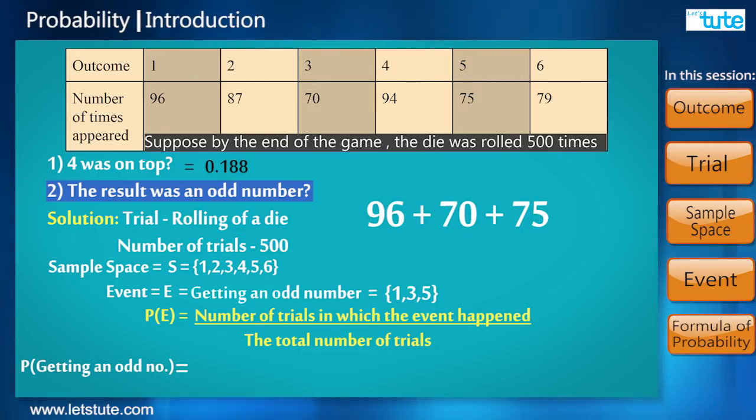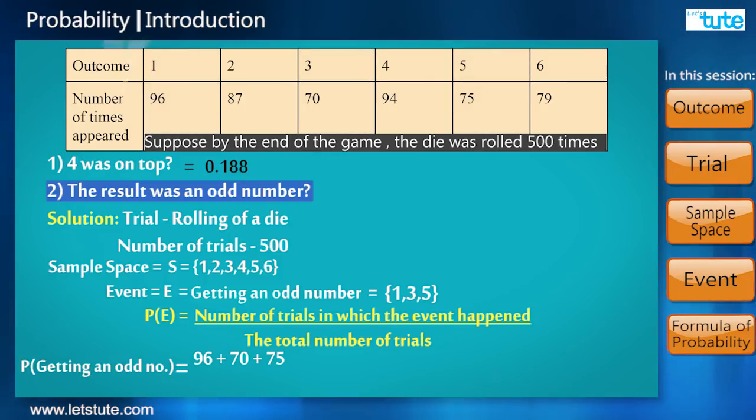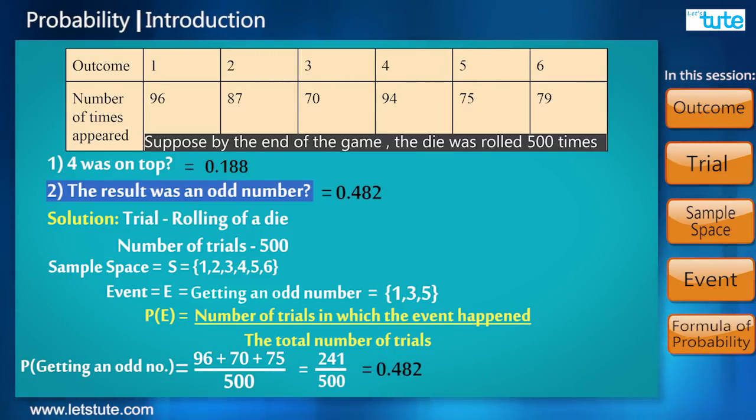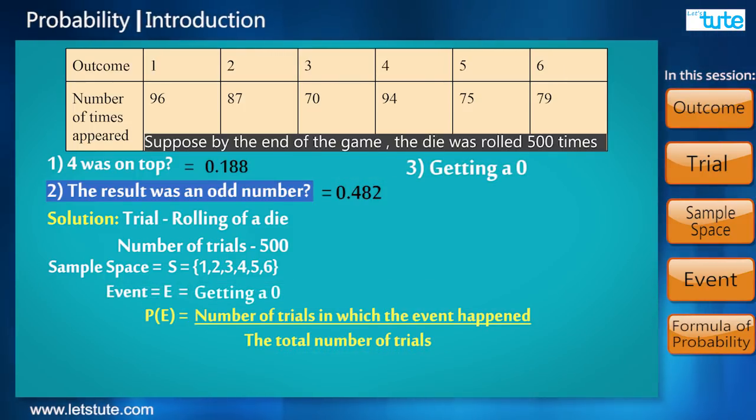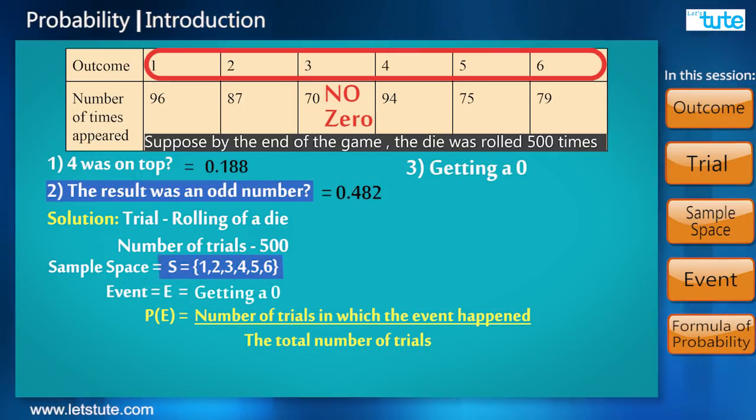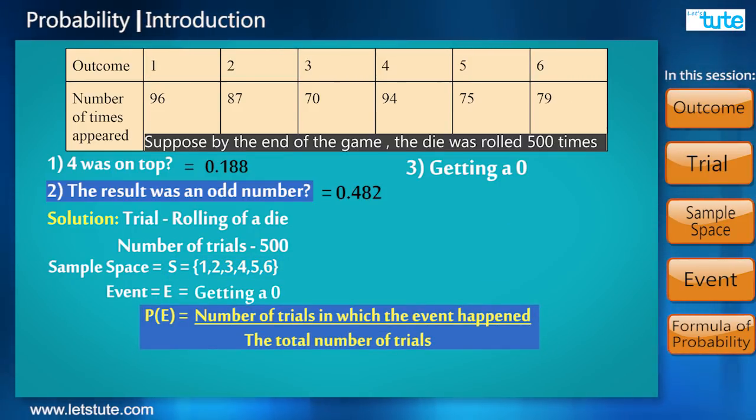So the probability of getting an odd number is 96 plus 70 plus 75 upon 500, or 241 upon 500. What is the probability of getting a zero here? Now zero is not a part of the sample space, so applying the formula, we get probability of getting a zero is 0.